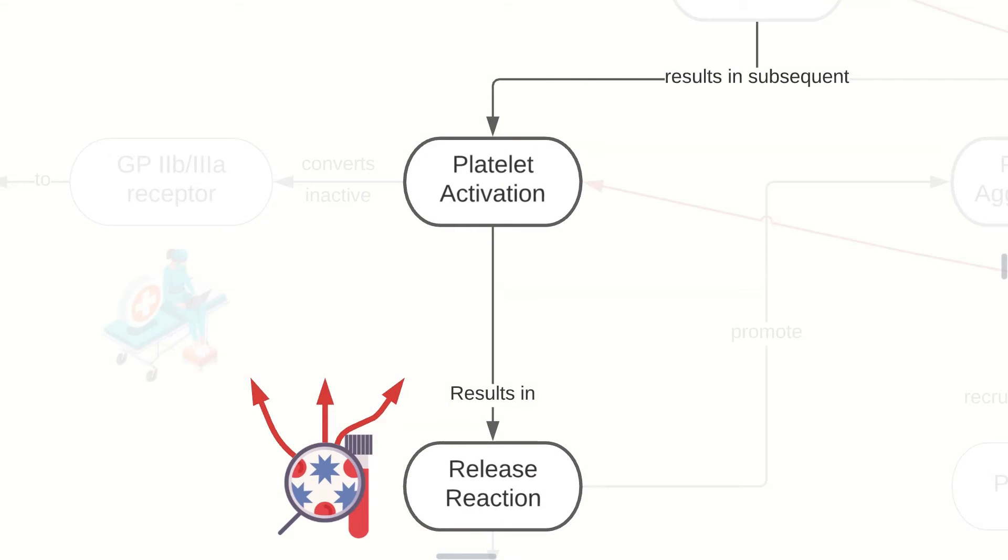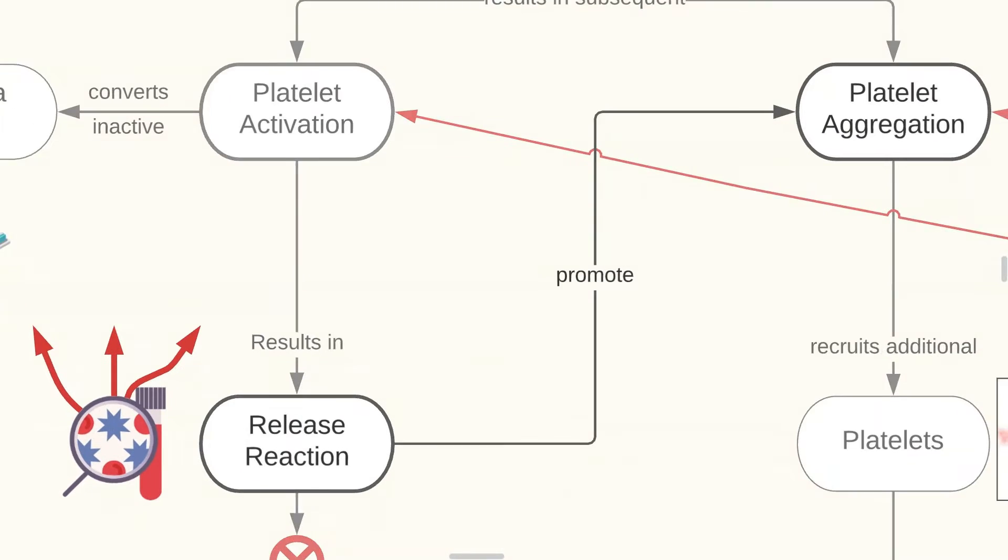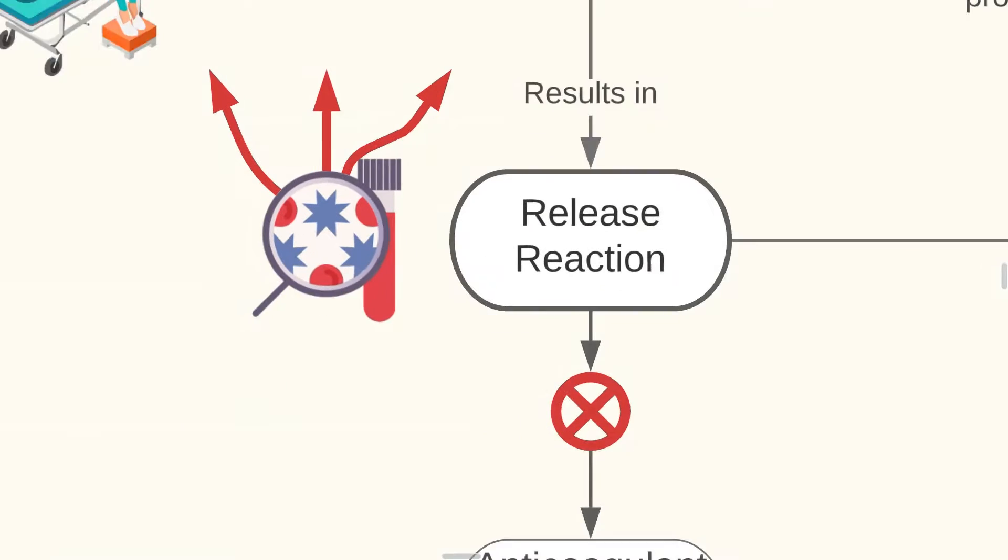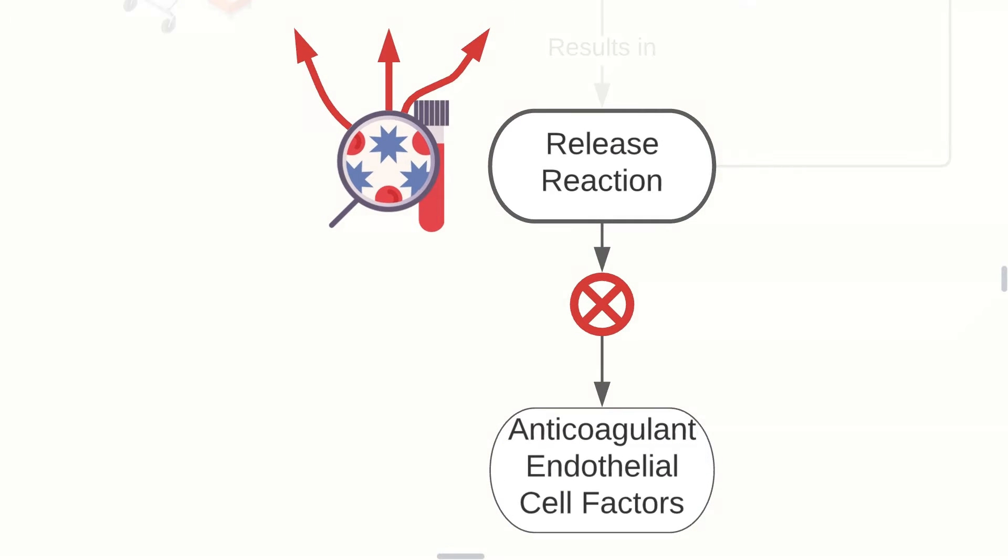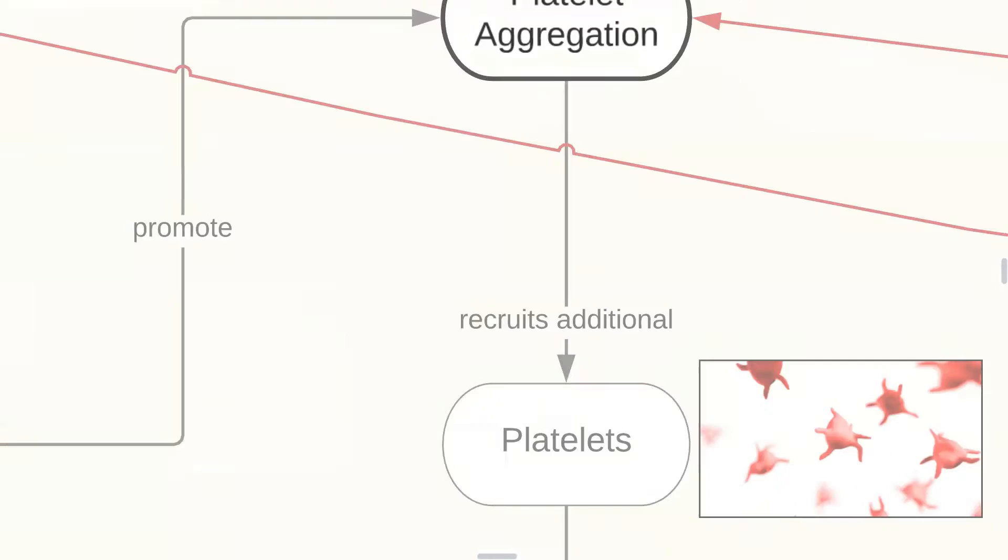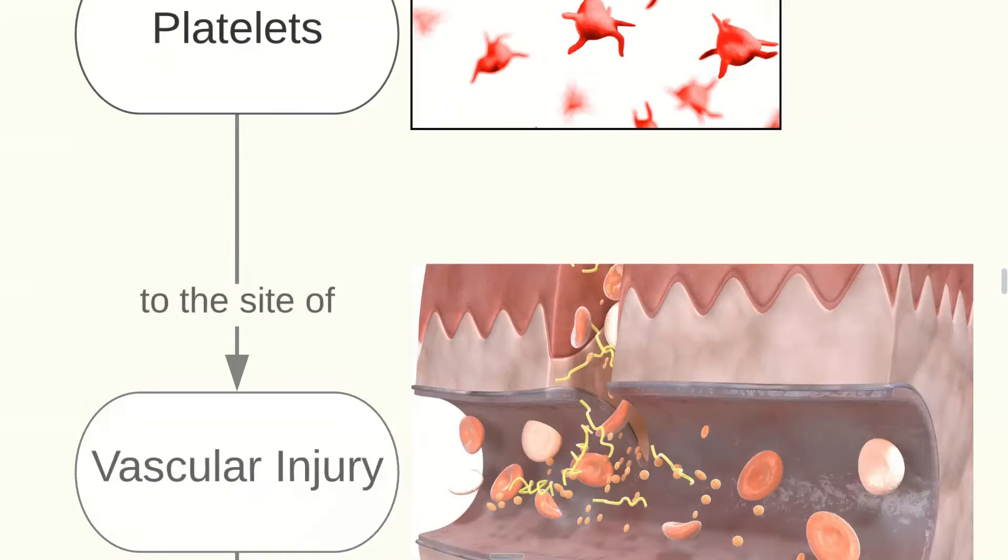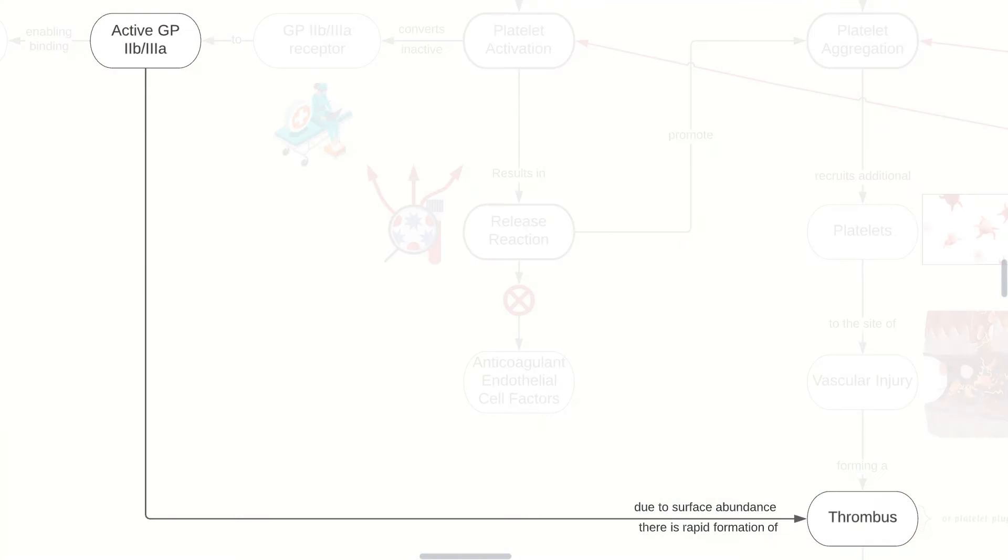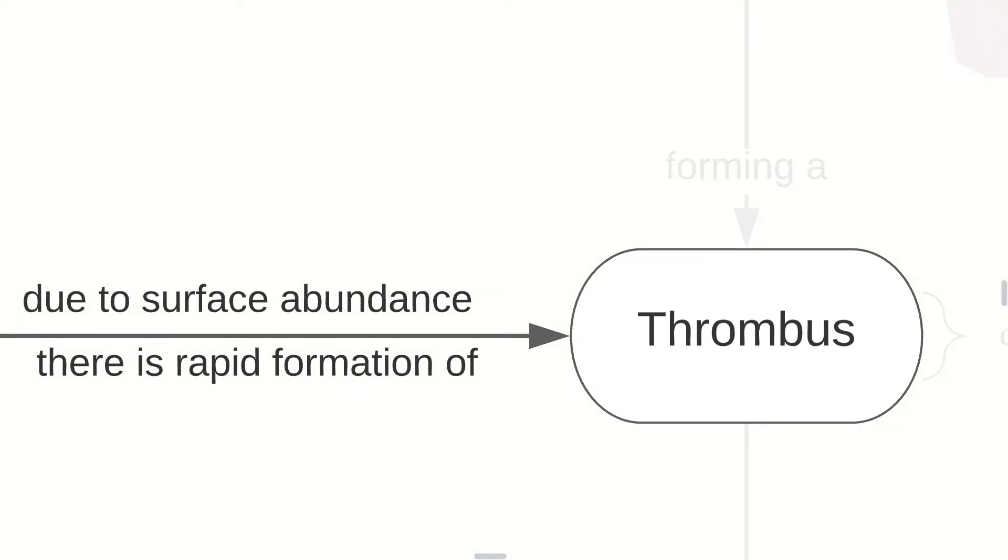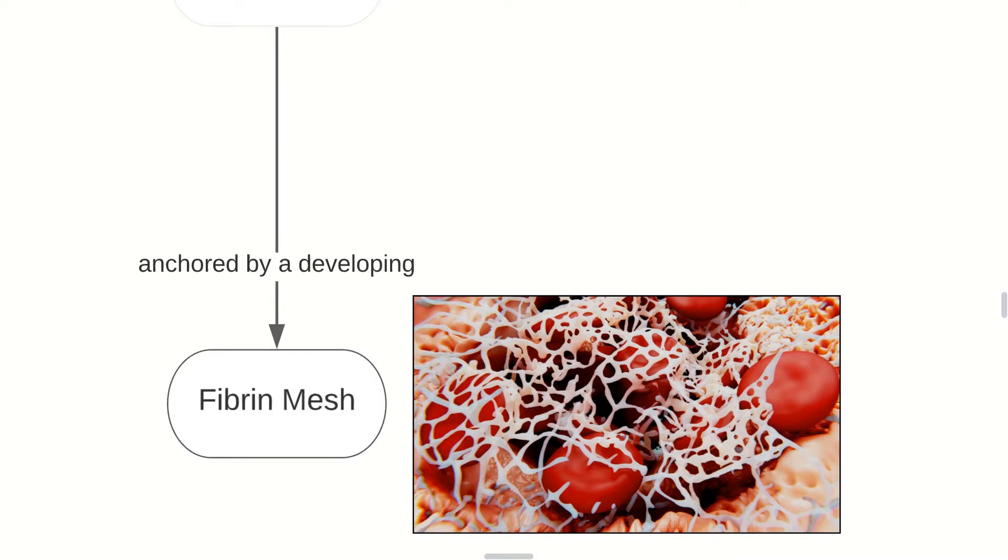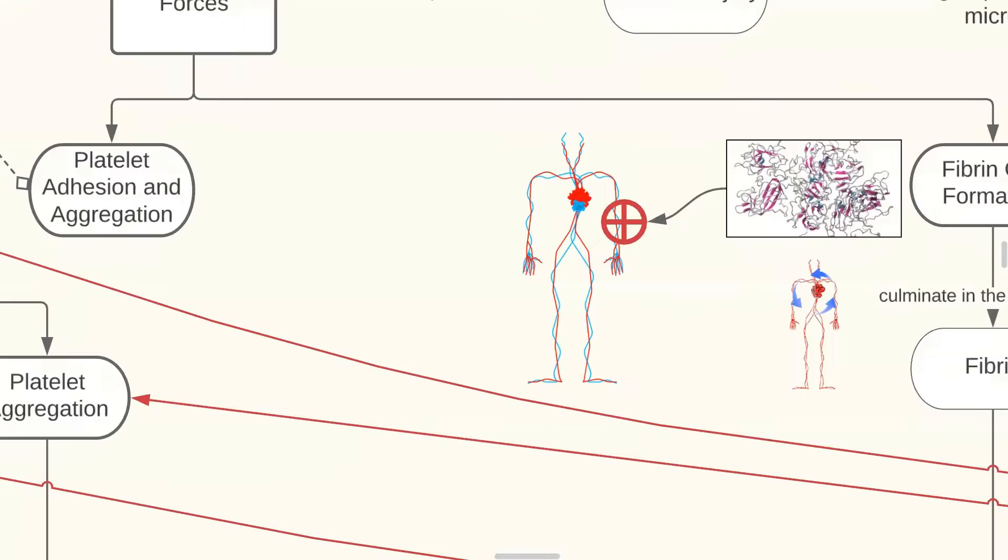Now that we've discussed platelet activation, this would result in a release reaction, which also promotes platelet aggregation. The release reaction inhibits the anticoagulant endothelial cell factors. Platelet aggregation recruits additional platelets to the site of vascular injury, forming a thrombus or a platelet plug. Now remember our GP2B and 2A that were activated before? Due to its surface abundance, there is rapid formation of thrombus, and this is anchored by a developing fibrin mesh that keeps things tied down together.